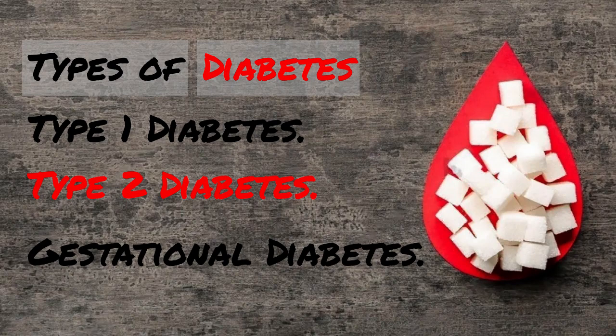What are the different types of diabetes? The most common types of diabetes are type 1, type 2, and gestational diabetes.